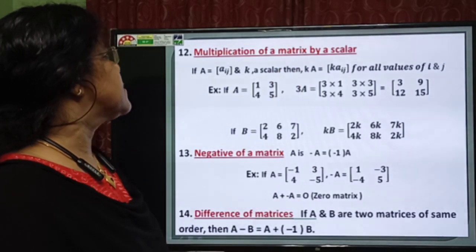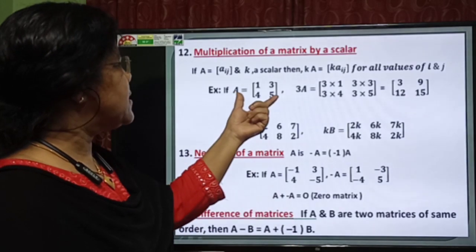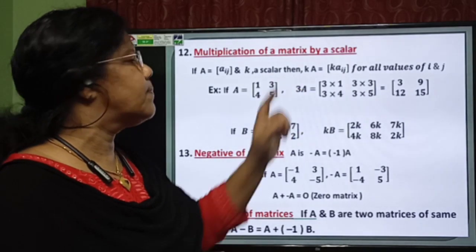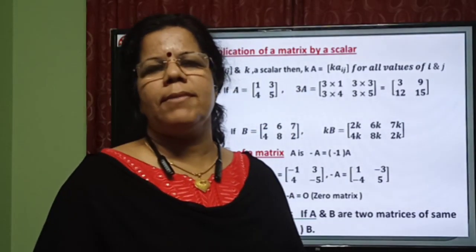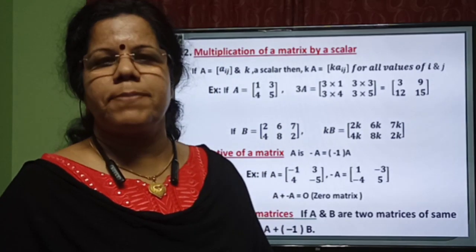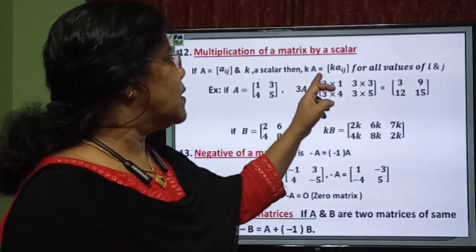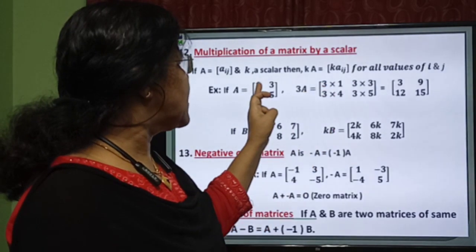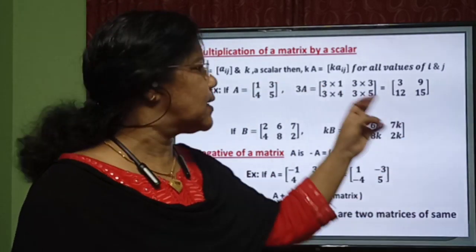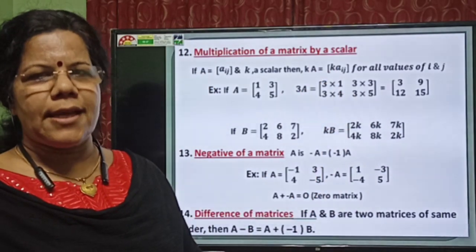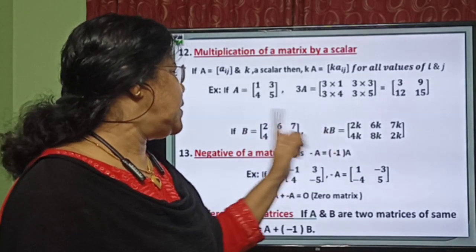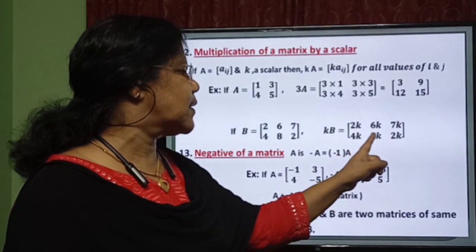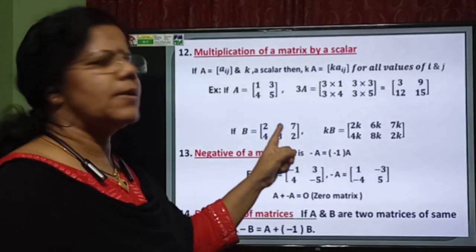Multiplication of a matrix by a scalar — that is the next concept. A matrix is multiplied by a scalar; in this example, it is multiplied with 3. When we multiply a matrix with a scalar, every element of the matrix is multiplied with 3. If k is a scalar and A is a matrix of any order, then kB is equal to the matrix with elements 2k, 6k, 7k, 4k, 8k, 2k, where B is the matrix given.